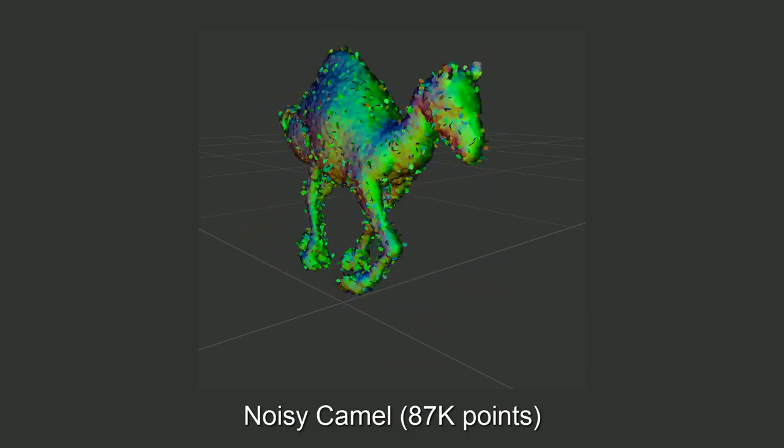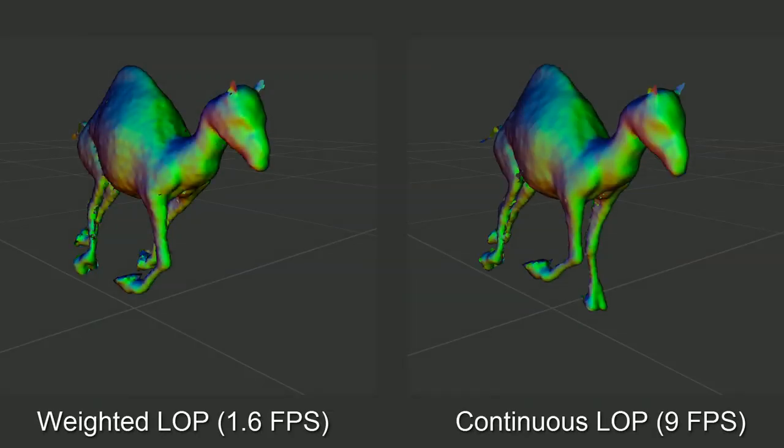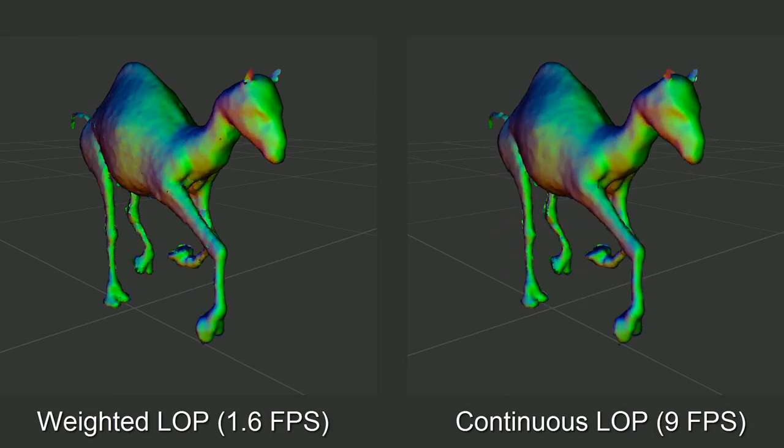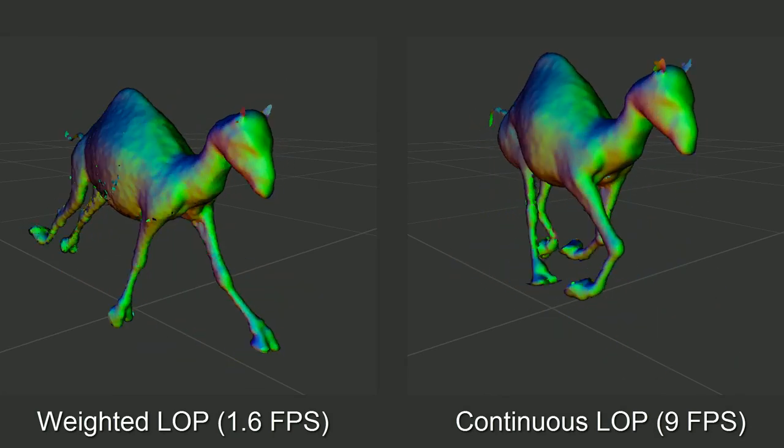Our method faithfully reconstructs difficult objects with thin features and a large amount of noise, while being several times faster than a comparable GPU implementation of weighted LOP.